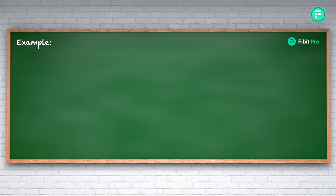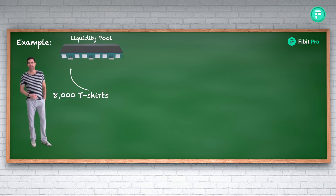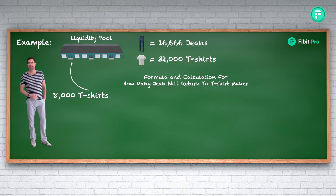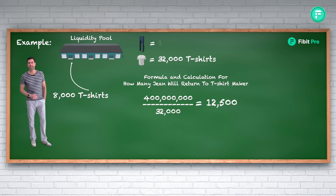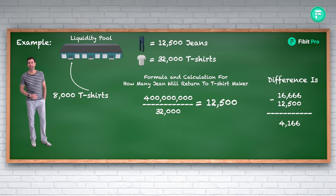Let's look at one more example. The t-shirt maker adds 8,000 t-shirts to the liquidity pool, which now has 32,000 t-shirts. The formula gives 400 million divided by 32,000, which equals 12,500 — meaning there should be 12,500 jeans remaining in the liquidity pool. The difference is 16,666 minus 12,500, which equals 4,166 jeans that the t-shirt maker will receive in return. This time he paid significantly more per jean, which is why the liquidity pool never runs out of stock.